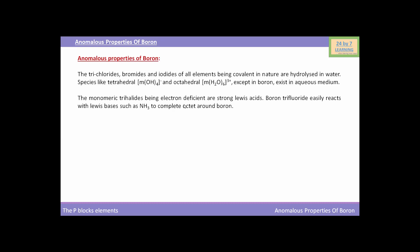The monomeric trihalides, being electron deficient, are strong Lewis acids. Boron trichloride easily reacts with Lewis bases such as ammonia to complete the octet around boron. As you can see here, BF3 (boron trifluoride) reacts with NH3 (ammonia) to form a Lewis adduct where F3B is bonded to NH3.